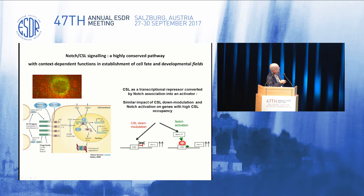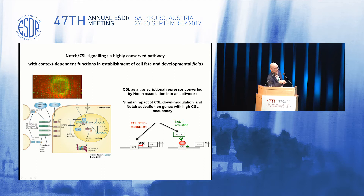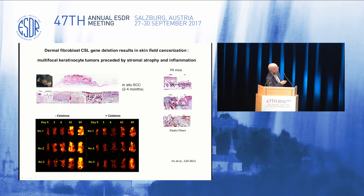One important element of Notch complexity is the CSL protein itself. Under basal conditions, CSL is a repressor of gene transcription. When Notch is activated, translocation of the receptor to the nucleus converts CSL into an activator, inducing target genes. But because CSL is a constitutive repressor, you can also have induction of the same target genes not only by Notch activation, but also by downmodulation of the CSL protein itself.